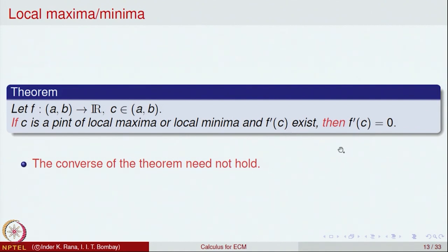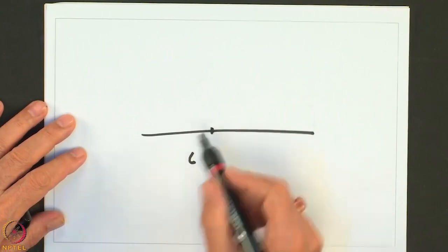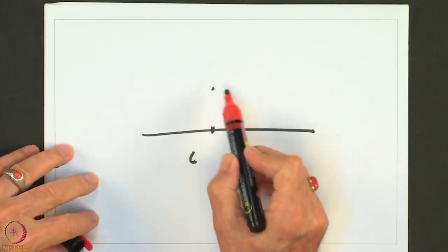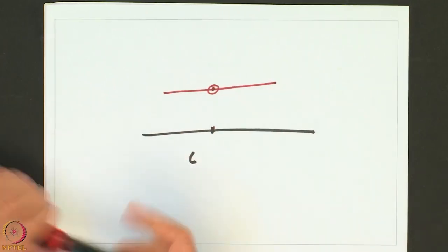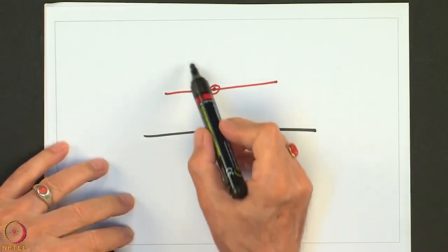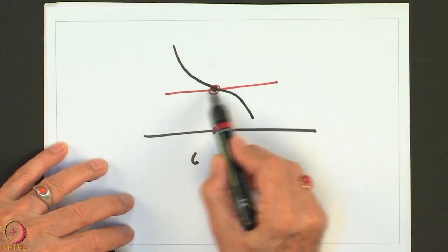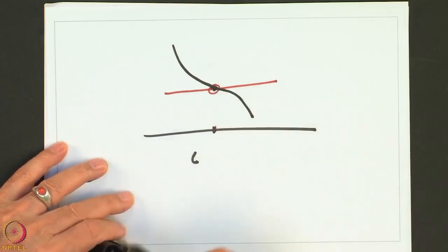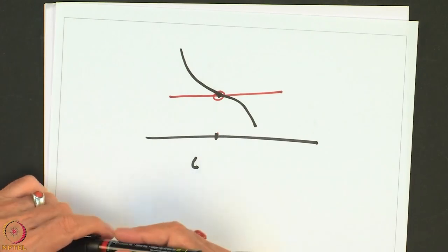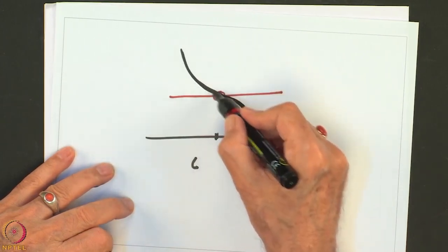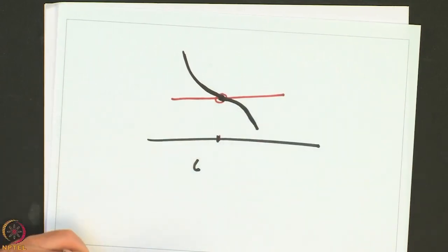Let me sketch a graph to illustrate why this happens. Consider a point c where the tangent is horizontal. A graph can pass through this point going up and then coming down, so the horizontal line is a tangent whether you approach from the left or the right. That means the left derivative and the right derivative both exist and are equal to 0.